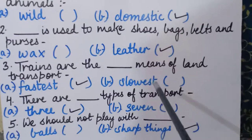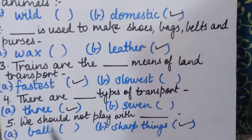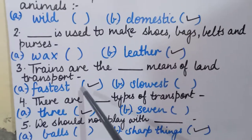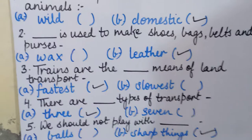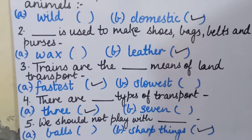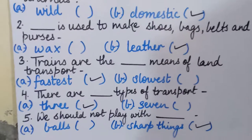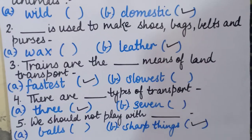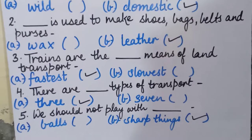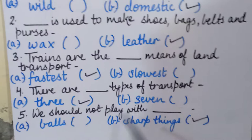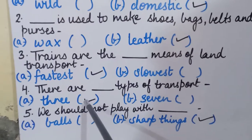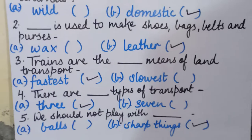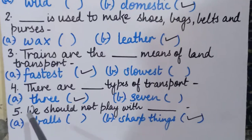The third sentence: 'Trains are the ___ means of land transport' — fastest or slowest? Trains are the fastest means, so tick 'fastest.' The fourth sentence: 'There are ___ types of transport' — three or seven? There are three types of transport, so we will put a tick in front of 'three.'